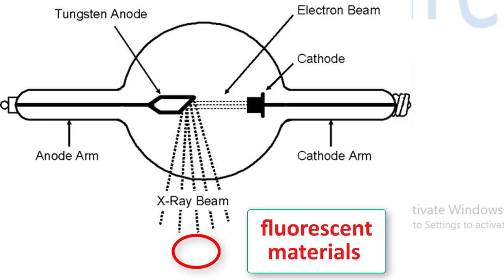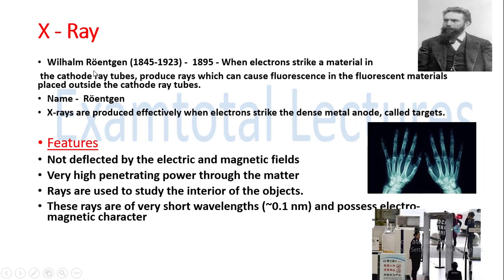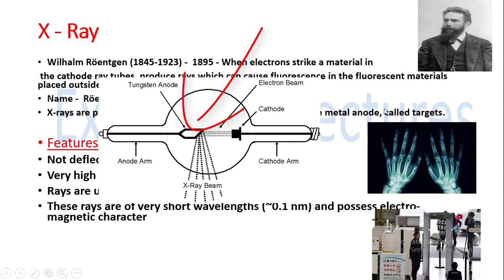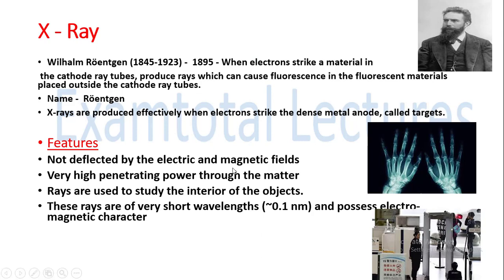That is why he named this as X-ray. He observed that the denser the metal we use as the anode — because that is where the electrons will strike — the more effectively X-rays are produced. These dense metal anodes are known as targets.